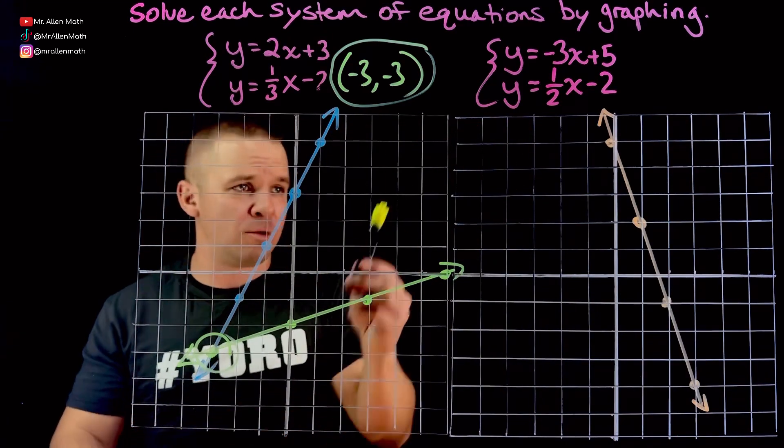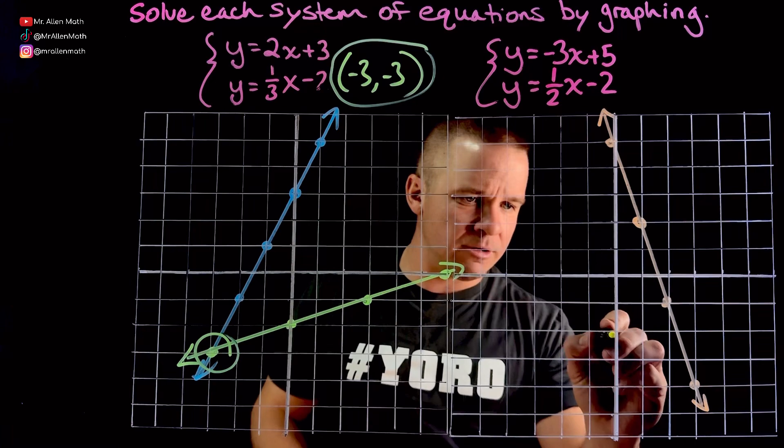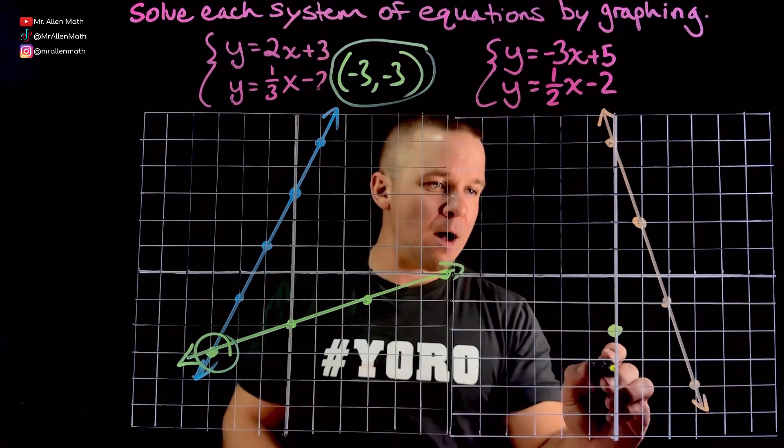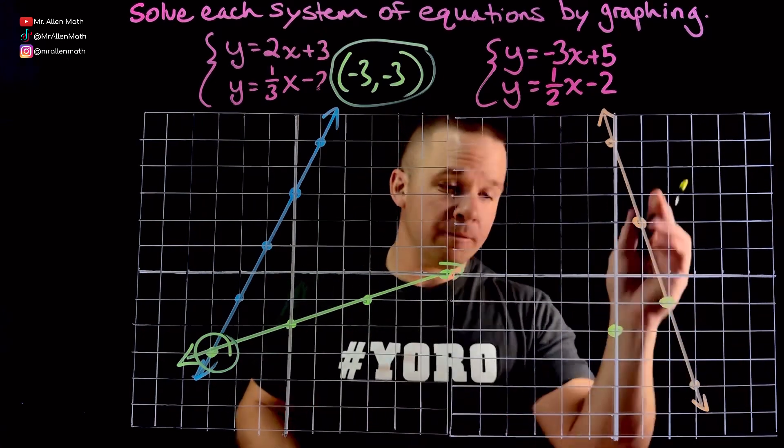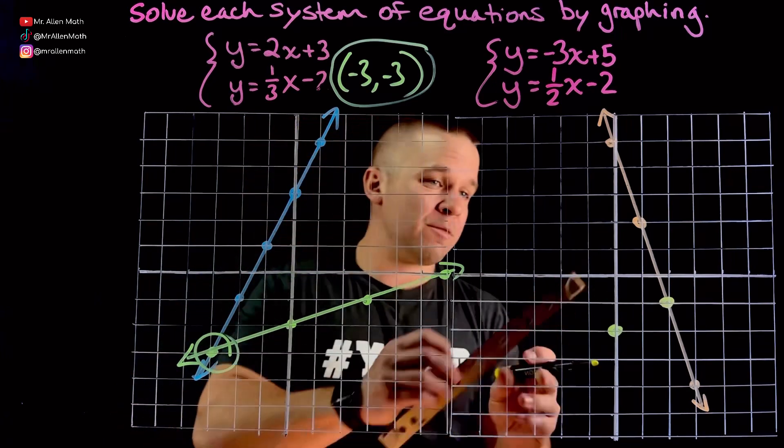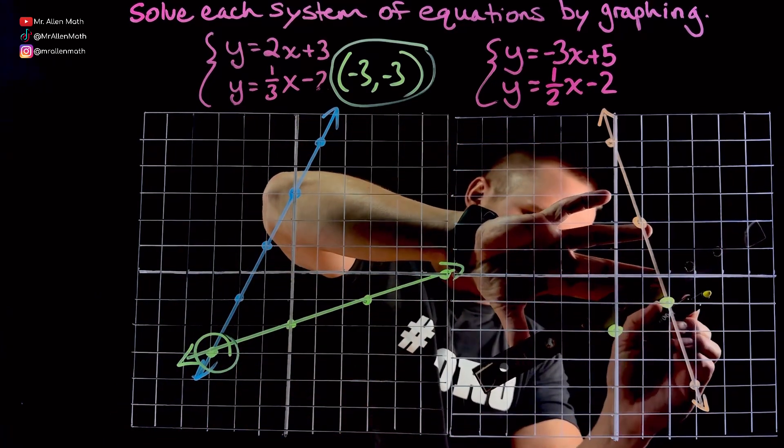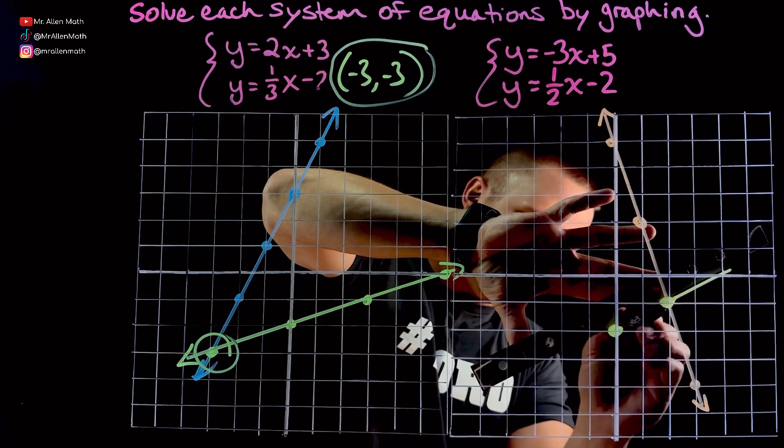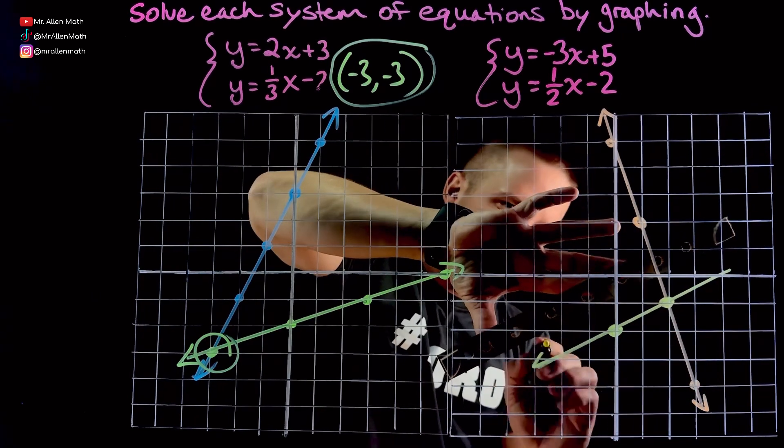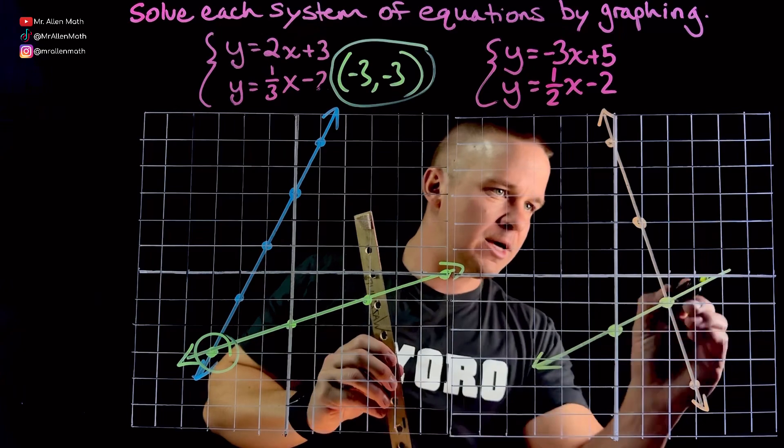And then let's do negative 2 here. I'll go with a yellow marker now. So down 2 for my y-intercept. I'm going to go up 1 over 2. I don't even have to plot any other points there. I already know where my solution is, but let's connect the dots, make it look dope. You know what I mean? All right. Beautiful. Wonderful. Awesome. Whoops. Excellent. Excellent.